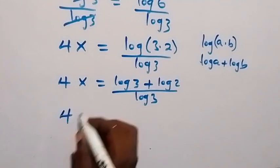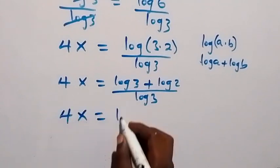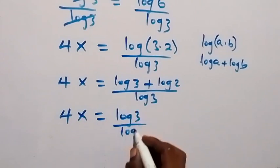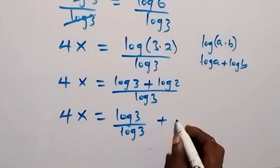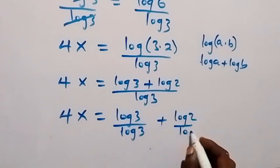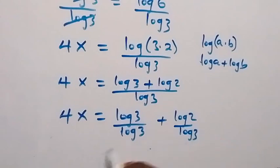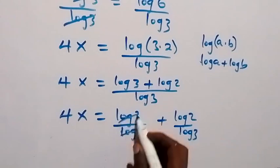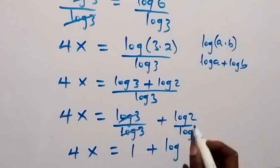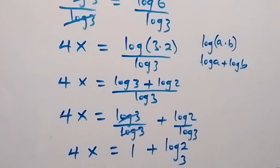we have 4x equals log 3 over log 3, plus log 2 over log 3. Log 3 over log 3 cancels out to 1.